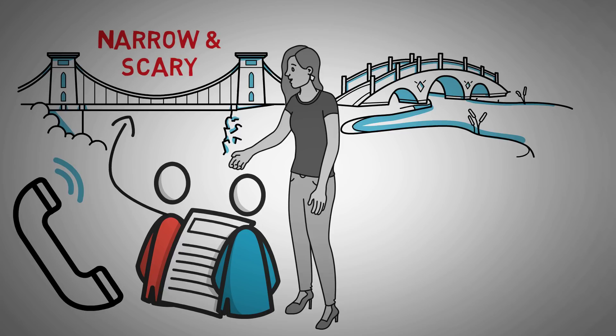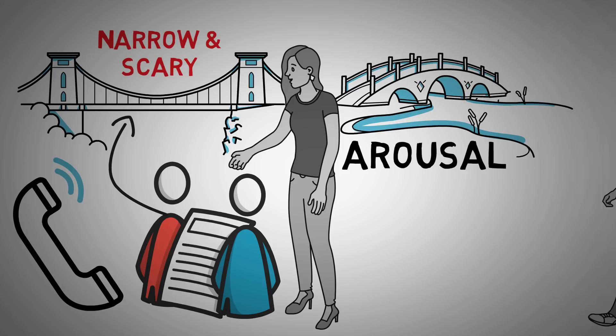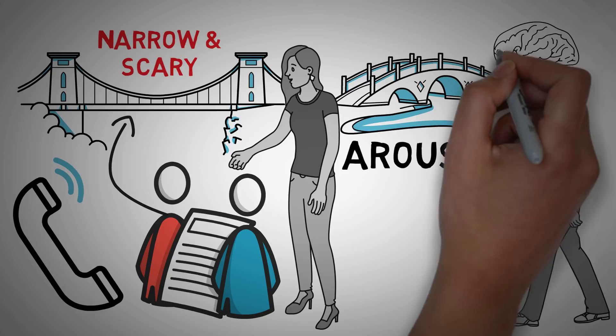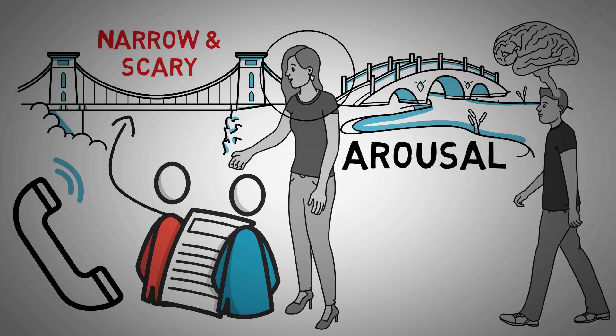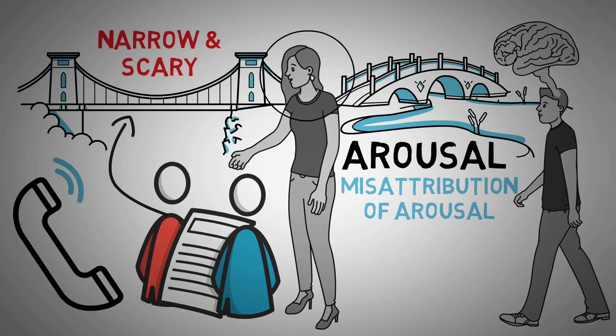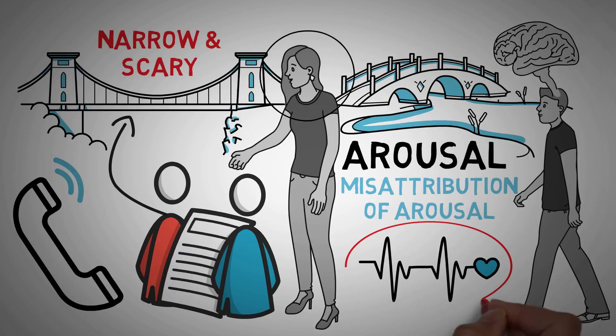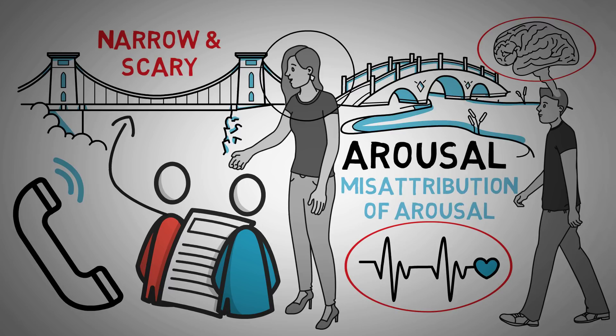The researchers believe that the men experienced physiological arousal from walking across the scary bridge, and then used cognitive processes to determine that their arousal was due to sexual attraction to the woman, not to the bridge. This is called the misattribution of arousal. One could argue that the men labeled their emotions incorrectly, but only because their physiological arousal and their cognitive interpretations were done in two separate processes. This study seems to give evidence to the two-factor theory of emotion.